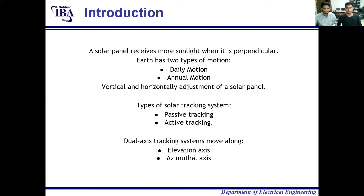We have designed a dual-axis solar tracker that moves along the azimuthal axis and elevation axis. The azimuthal axis is the axis moving around the horizontal motion, and the elevation axis is the movement around the vertical directions.